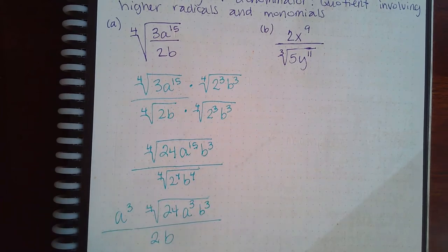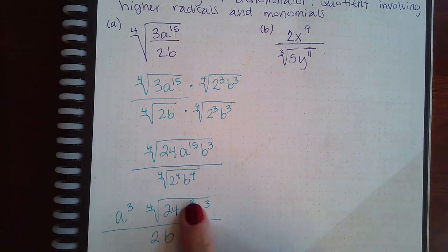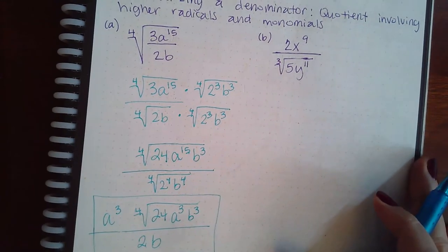And just leave me with this expression. So I have a cubed on the outside, 24a cubed, b cubed on the inside, and then a 24b in the denominator. Now let's simplify the next problem.